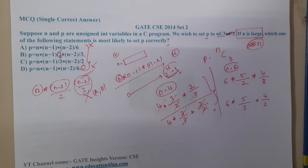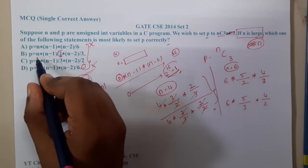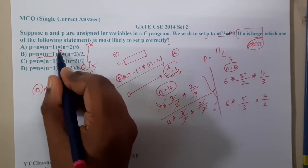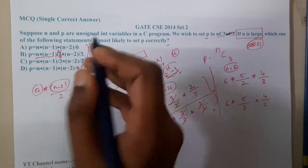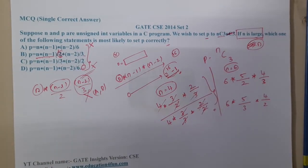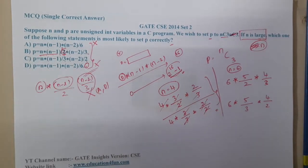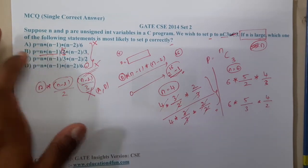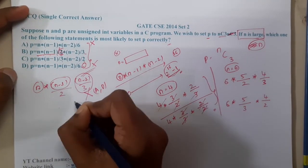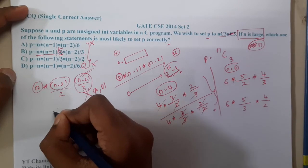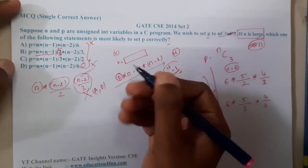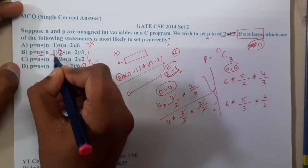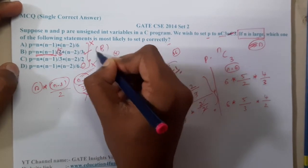With n into n minus 1 by 2, among any one of them will be compulsory even number. If n is an odd number, n minus 1 will be even. If n is even, n minus 1 will be odd. So anyone will be even. That is the reason why option B is the best option.